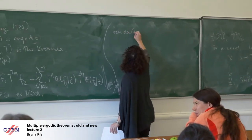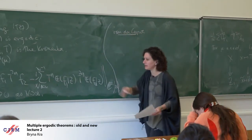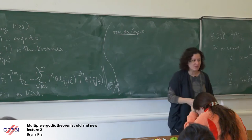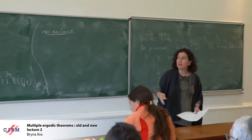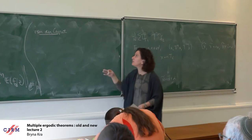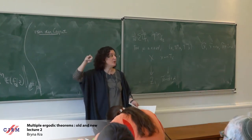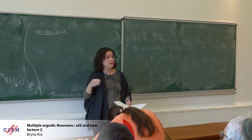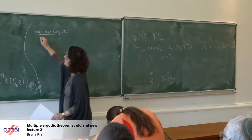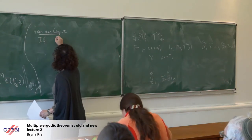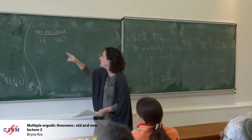The van der Corput lemma was widely used in number theory for proving things like equidistribution results in uniform distribution. Vitaly imported it to ergodic theory to prove the polynomial ergodic theorem. Let me state it in general — we're only going to apply this to the unitary operator, but there's no difference to prove it or state it in general.